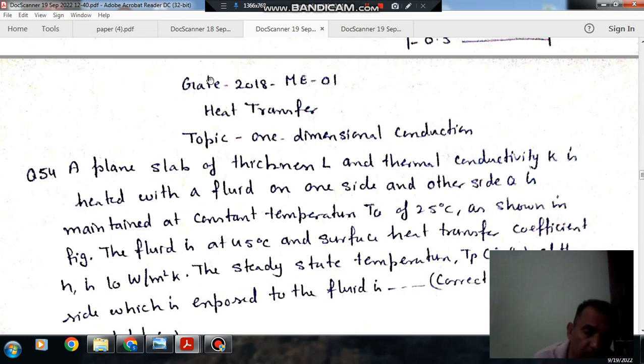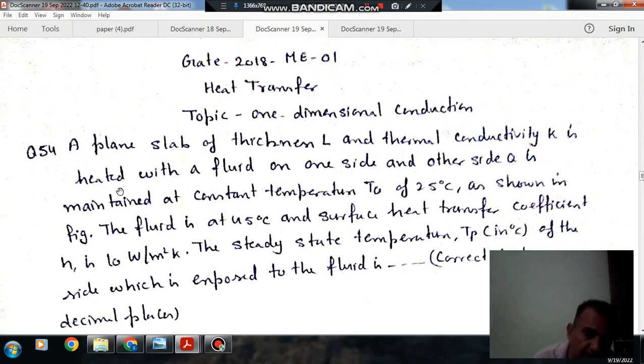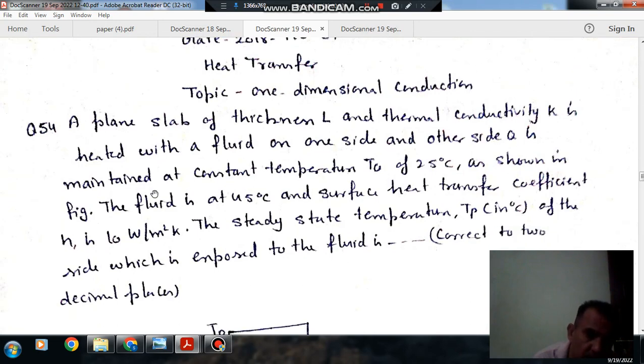Question number 54 from GATE 2018 ME-01: A plane slab of thickness L and thermal conductivity K is heated with a fluid on one side, and the other side Q is maintained at constant temperature TQ of 25 degrees Celsius, as shown in the figure.